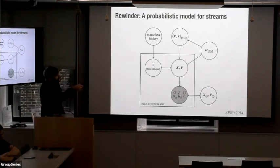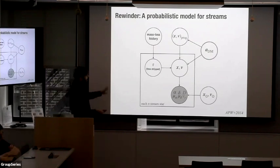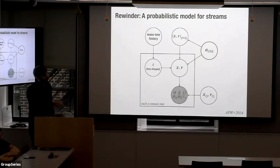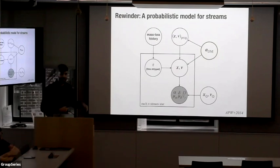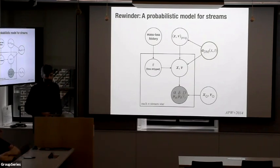So generically, you have to model all of these different things simultaneously — that's a lot of parameters. This model has a few nice properties: the most promising aspect is that you can put anything you want into this acceleration field. It doesn't just have to be a toy model for the Milky Way — this could be something complex and time-evolving, and we'll see later on why that's going to be important.